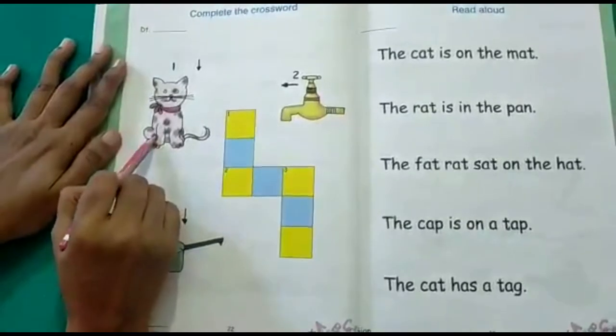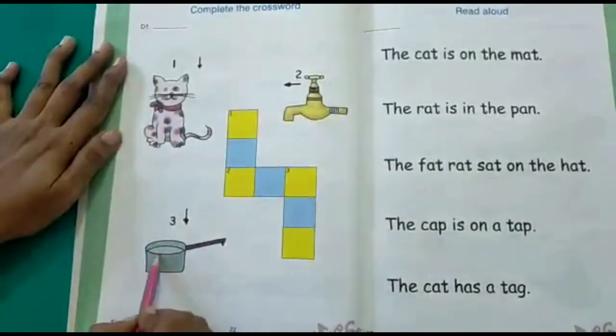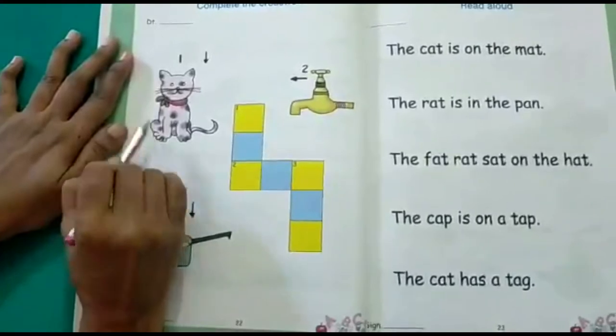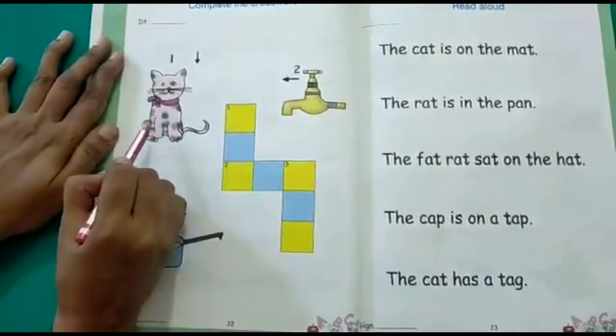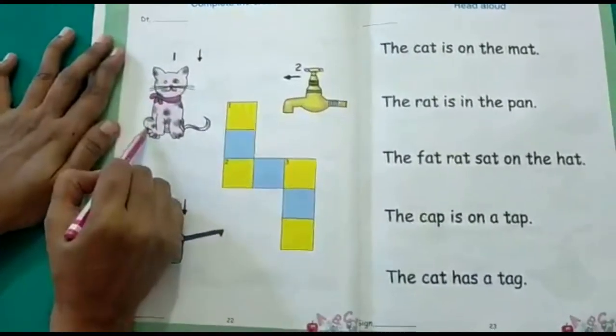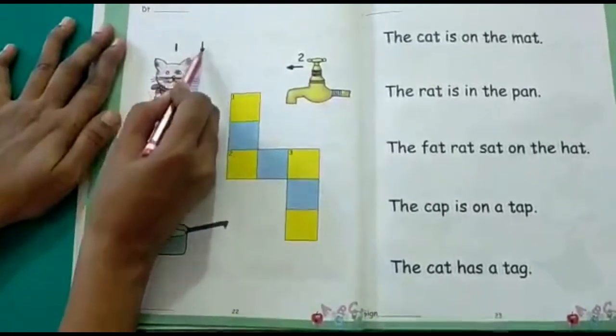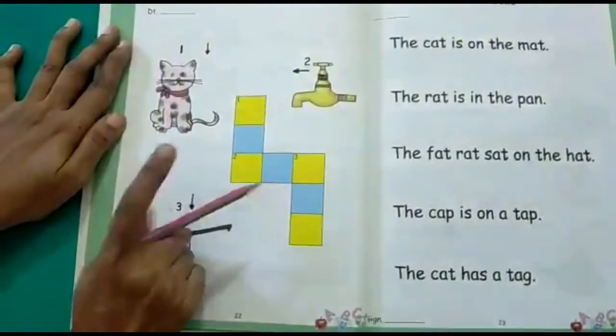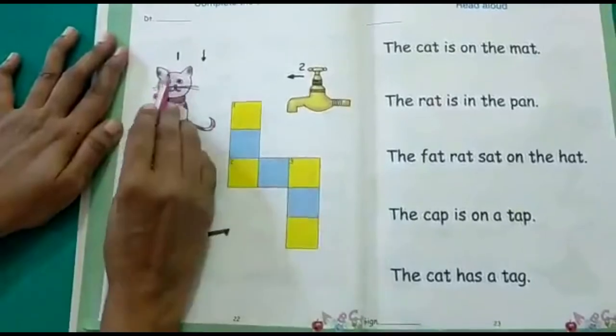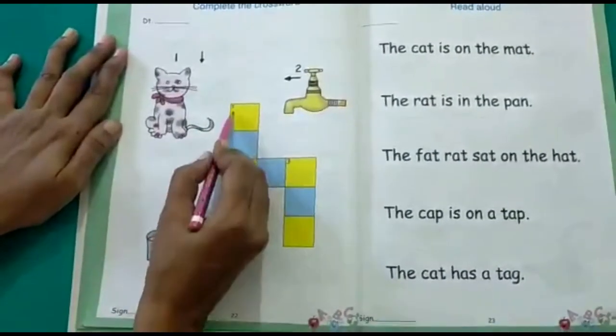Here you have a picture. These pictures are given as clues. What picture is this? Number 1 is the picture of a cat and there is an arrow pointing downwards. This way. So where is number 1 written in this crossword puzzle? Here.